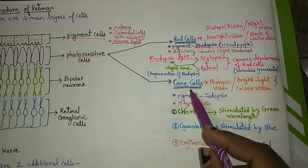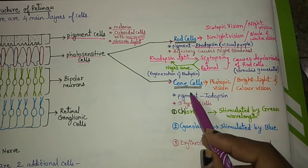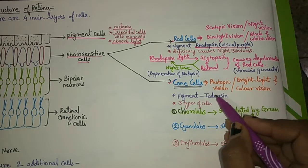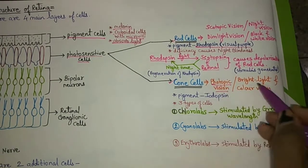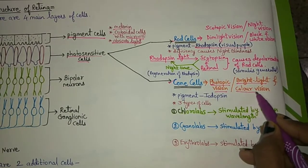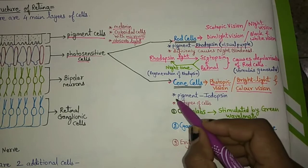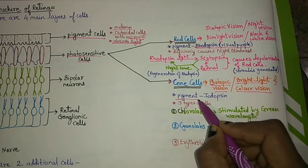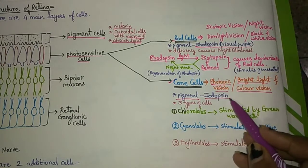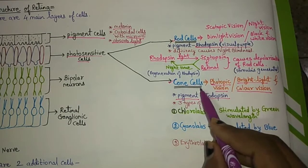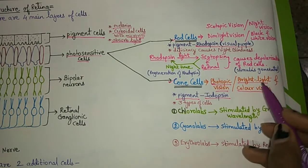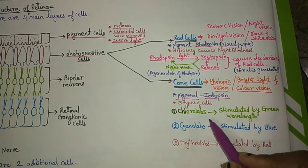The next photosensitive cells are cone cells. Cone cells are responsible for photopic vision — that is, bright light vision or color vision. The pigment in cone cells is iodopsin, and these cells are responsible for color vision.